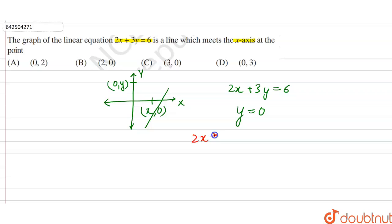So 2x plus, we can substitute the value of y as 0 which is equal to 6. So 2x plus 3 into 0 is 0 which is equal to 6. So 2x is equal to 6 or x is equal to 6 divided by 2 which is equal to 3.